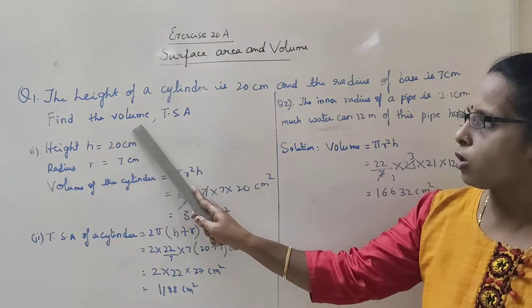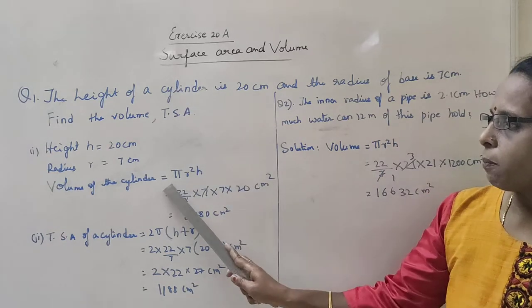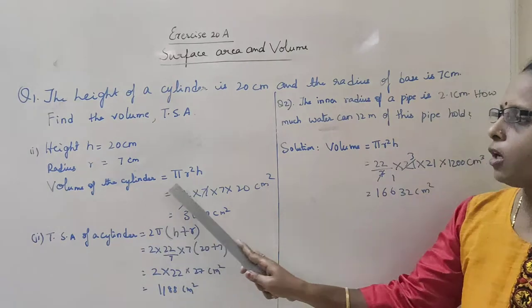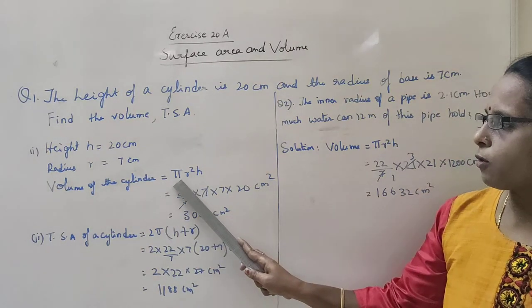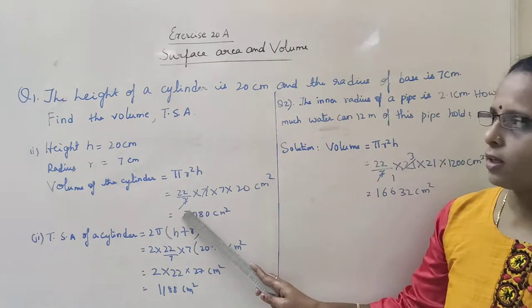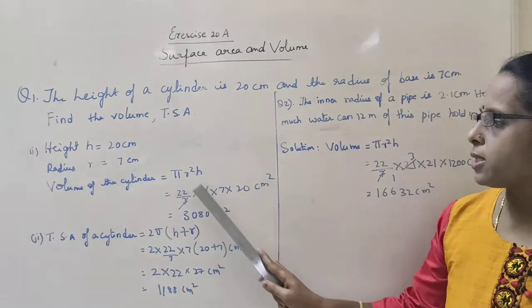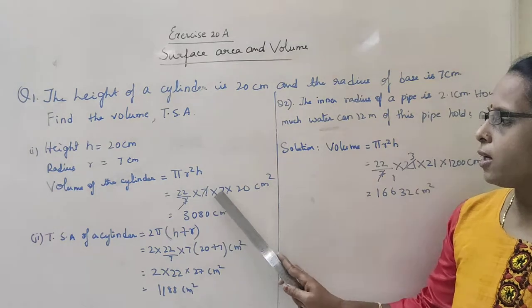To find out the volume of the cylinder, the formula is pi r square h. What is the value for pi? 22 by 7, and the radius is 7 cm. So r square means 7 into 7, and height...